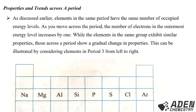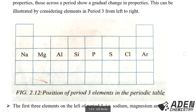Elements in the same period have the same number of occupied energy levels. As you move across a period, the number of electrons in their outermost energy levels increases by one. While elements in the same group exhibit similar properties, those across a period show a gradual change in properties. This can be illustrated by considering elements in period 3 from left to right.